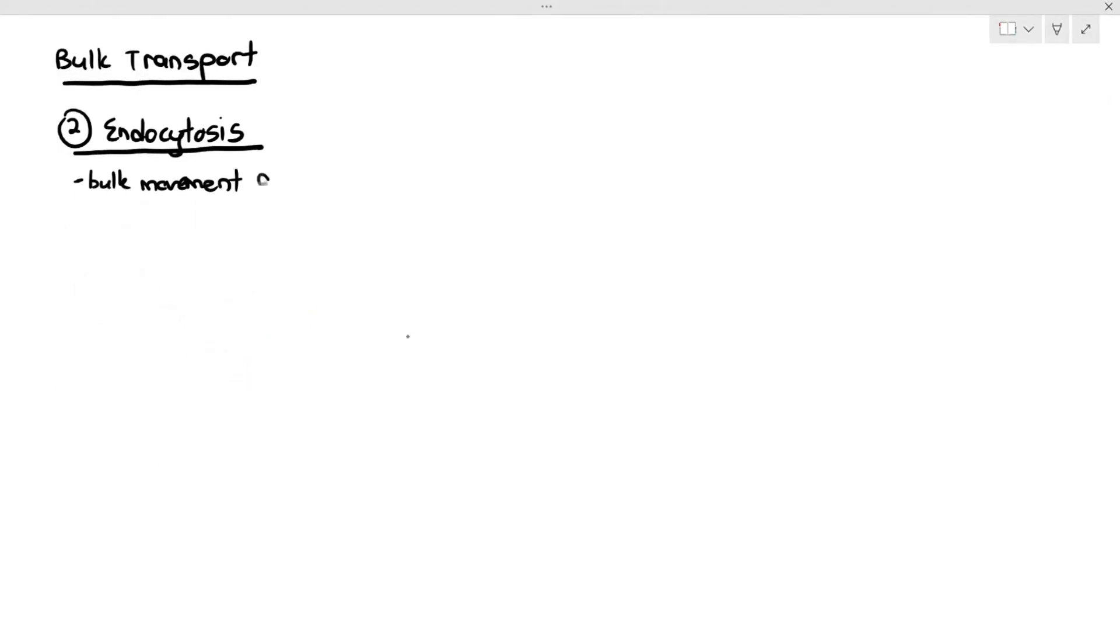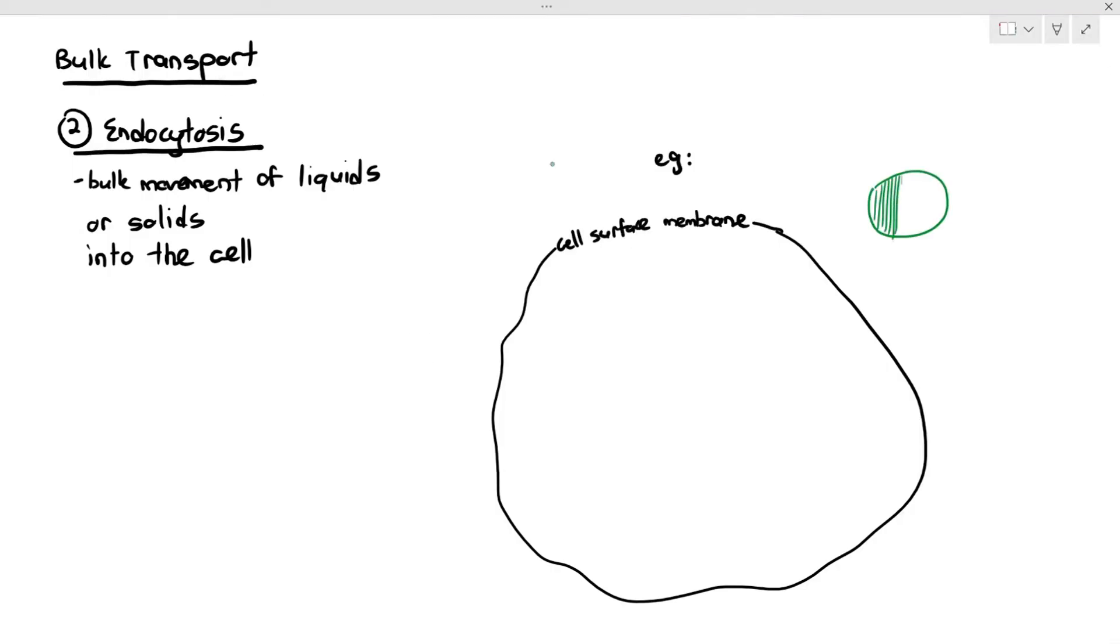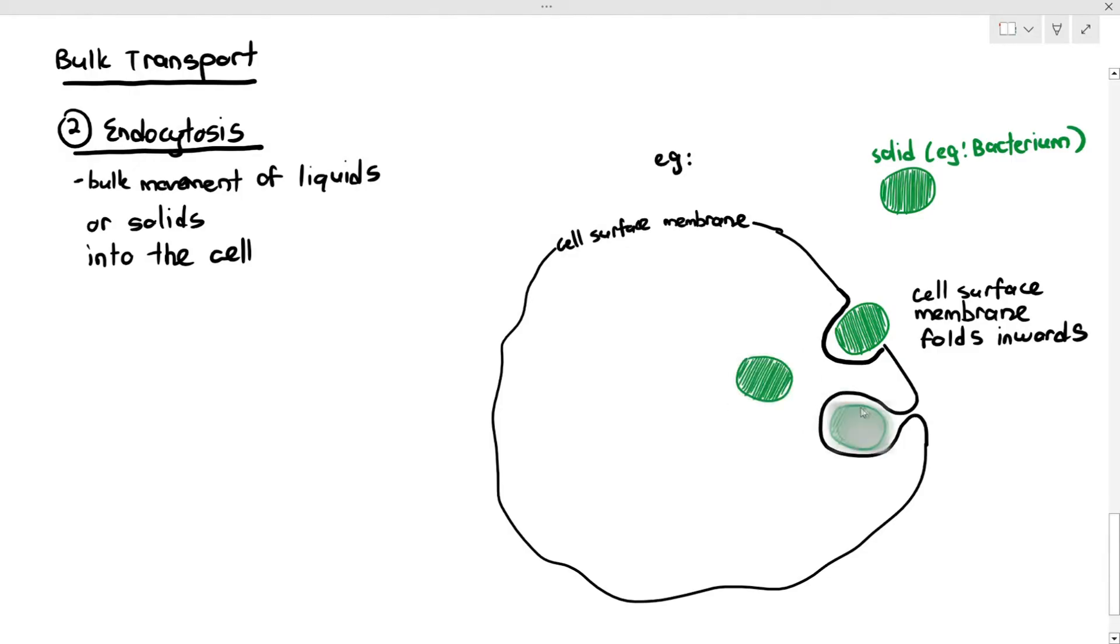This is another type of bulk transport called endocytosis. And in endocytosis, what happens is, it is just the bulk movement of liquids or solids into the cell. For example, as you can see, there's a cell here with its cell surface membrane, and it has a solid substance. An example of a solid substance is a bacterium. And let's say my cell, this very large cell, wants to ingest the bacterium. What it does is, the cell surface membrane will fold inwards, and it will engulf it and forms a vesicle containing the substance. So this is one way endocytosis can happen.